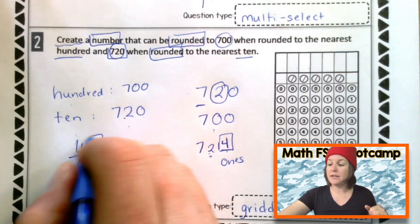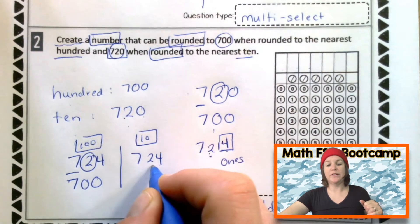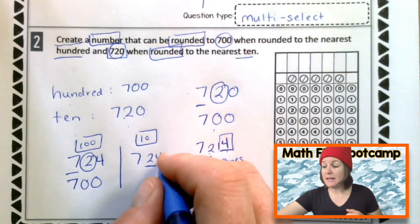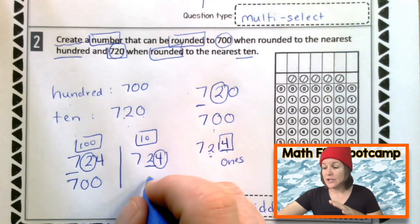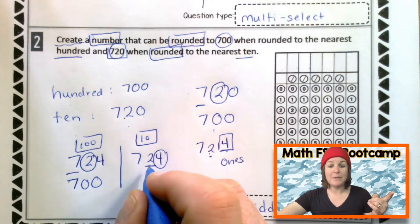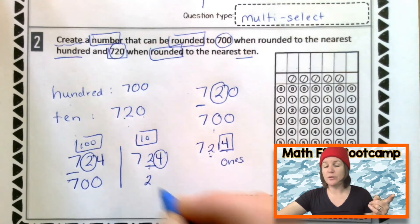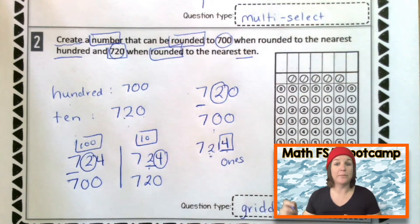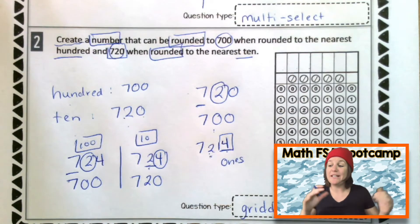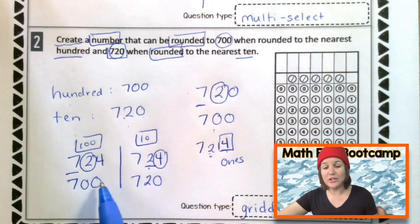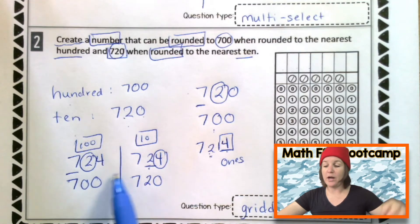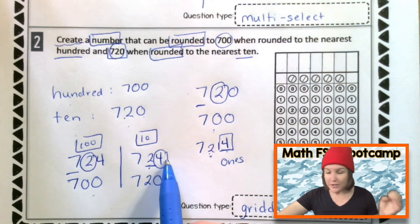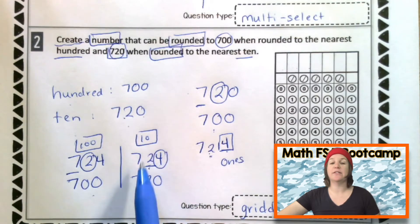And now to the tens place. Ones, tens. When you round, find, and underline the place. Spotlight to the right. Decide the digits fade. So, the four means that we just keep it the same. Keep the two the same. Everything before, drop it down. And everything after becomes zero. Check me out. Now I'm the rounding hero. And look at that. My number that I chose, 724, does round to 700 when rounded to the nearest hundred. And my number 724 does round to 720 when rounded to the nearest ten.